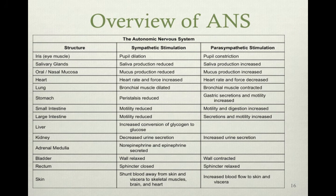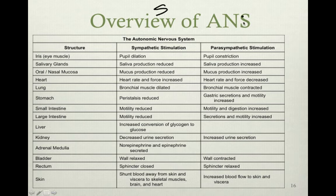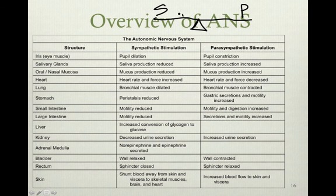In the overall overview of the autonomic nervous system, thinking of it like a teeter-totter makes it easier to understand sympathetic versus parasympathetic and how homeostasis is maintained. For example, if pupils dilate due to an adrenaline dump, the parasympathetic nervous system causes pupil constriction — these systems are constantly battling to maintain balance.